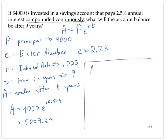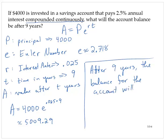After nine years, the balance for the account is $5,009.29.